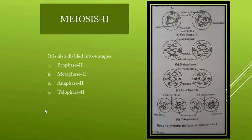After this, Meiosis II begins. It also has four stages: Prophase II, Metaphase II, Anaphase II, and Telophase II. We will now see these stages.